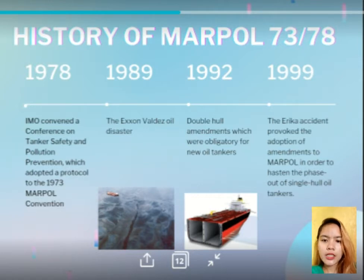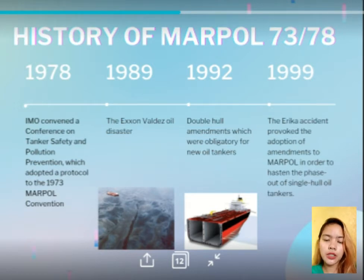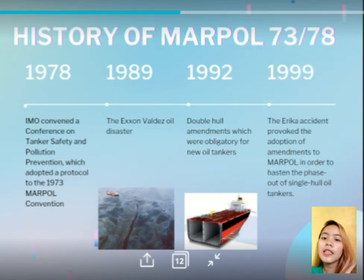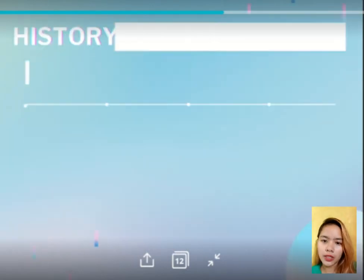In 1992, double hull amendments were made obligatory for new tankers of 5,000 deadweight tons and above, built after 1996, to be fitted with double hulls or an alternative design permitted by IMO. In order to discontinue the use of single hull tankers, a phase-out process was adopted. In 1999, the Erica accident provoked the adoption of amendments to MARPOL in order to hasten the phase-out of single hull oil tankers.